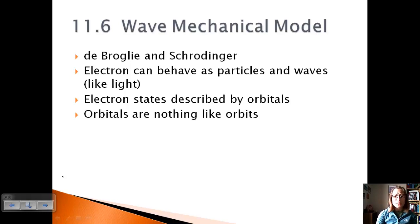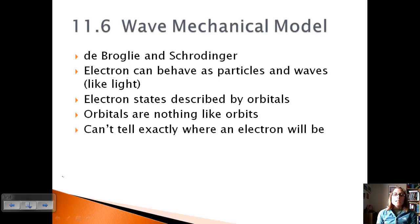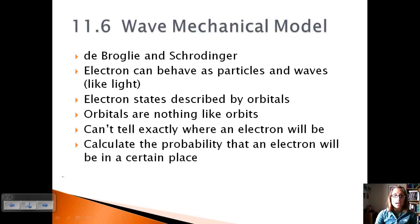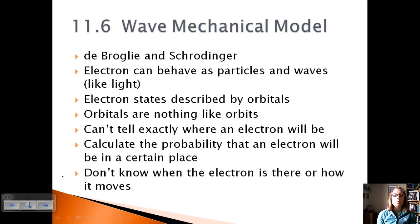We have to keep the terms orbital and orbit very clear. The problem with this model is that we don't really know where an electron is specifically at any point in time. All we can do is calculate the probability that an electron will be in a certain place — we don't know when it's there or how it gets there. We just say 90% of the time it's in this location, and we can get different shapes based on where we think the electrons are occurring.